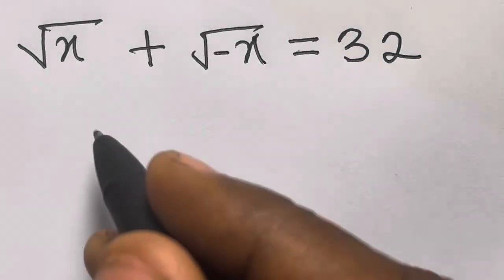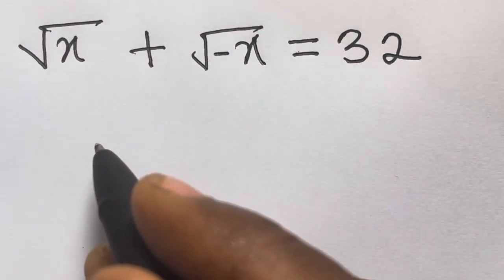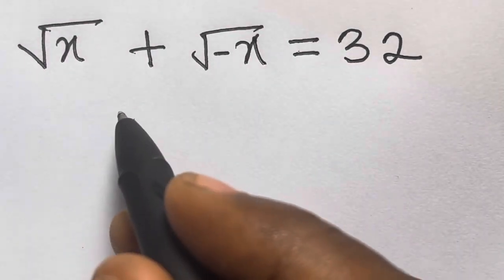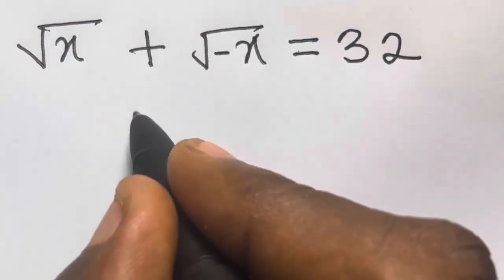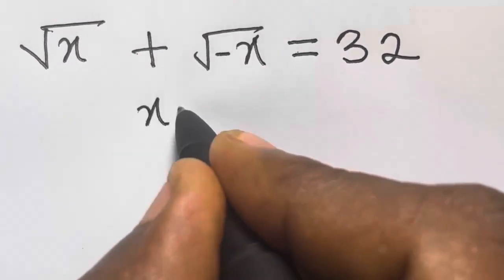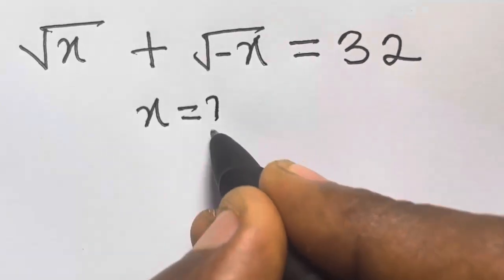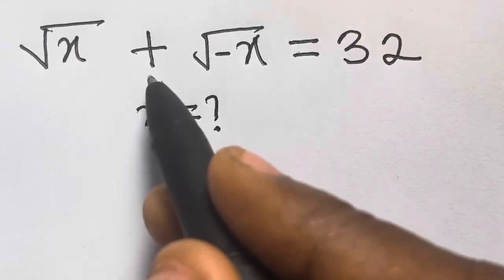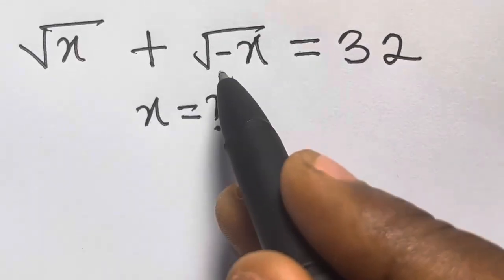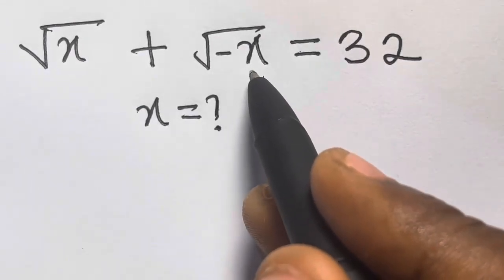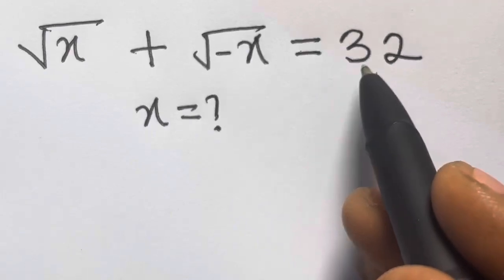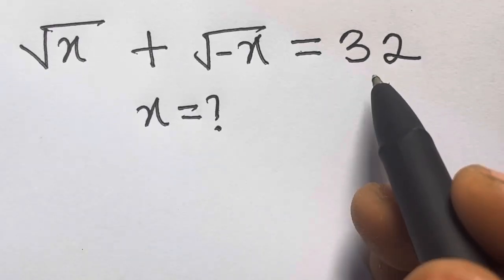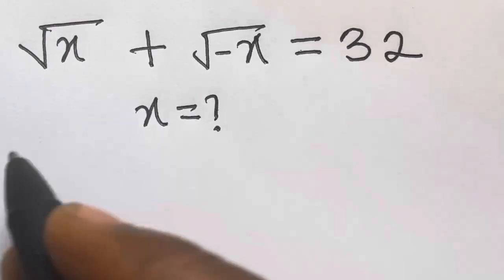Hi, welcome to Mathematics. In this video, we want to solve for x in: square root of x plus square root of minus x equals 32. So let's see a solution.